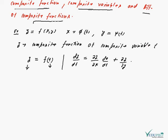In this position, z is the composite function and t is the composite variable. We differentiate the composite function with respect to the composite variable.